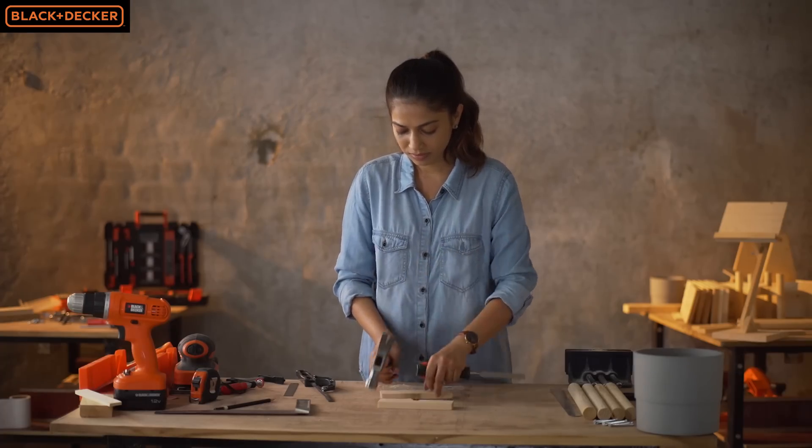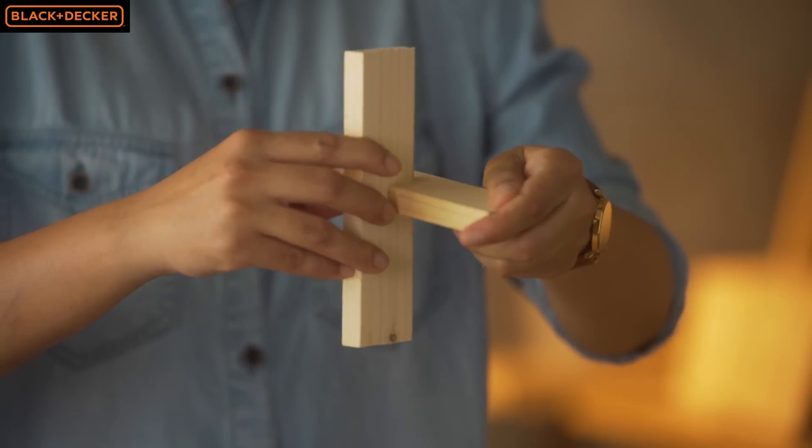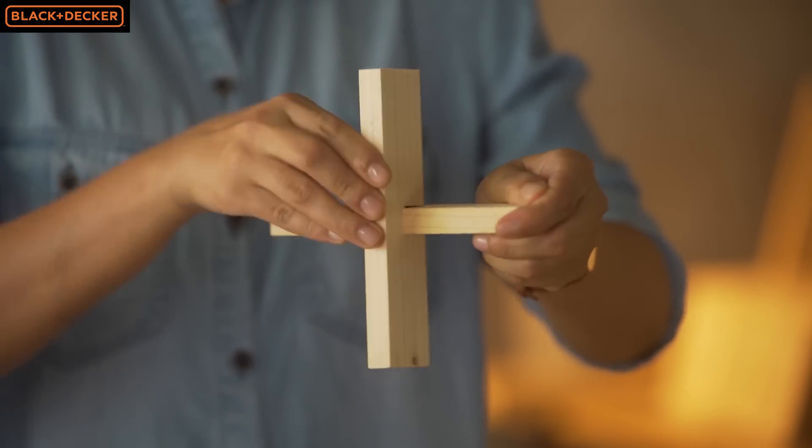This is how the pieces look after cutting out the notch. You can interlock them to create a cross beam. This is called a half lap joint.